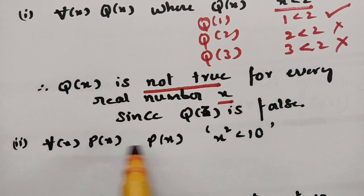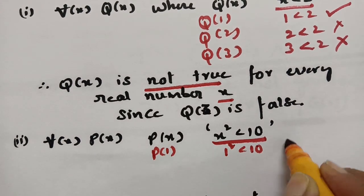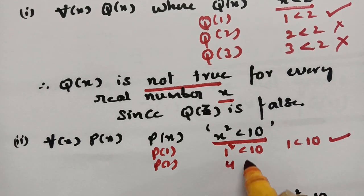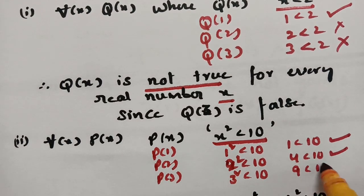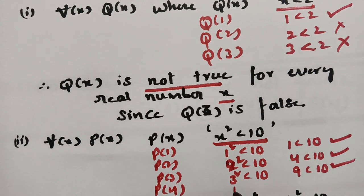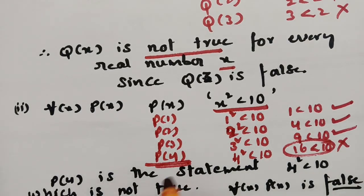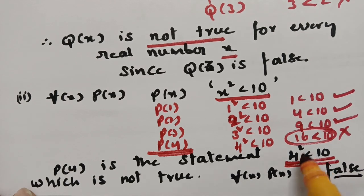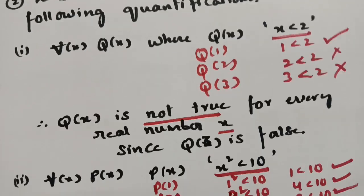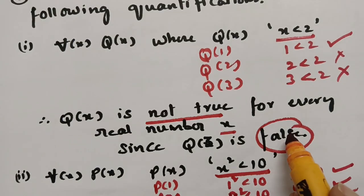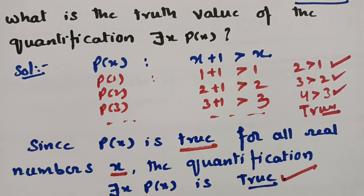The second part: for all x, p(x), where p(x) is x² < 10. If x = 1: 1² = 1 < 10 — true. If x = 2: 2² = 4 < 10 — true. If x = 3: 3² = 9 < 10 — true. If x = 4: 4² = 16 < 10 — false. Since p(4) is false, ∀x p(x) is a false statement. This is how we determine whether a quantified statement is true or false — it must hold for each and every value in the domain.